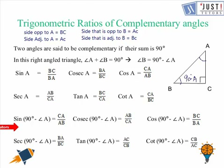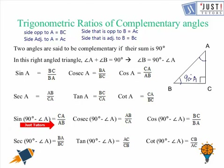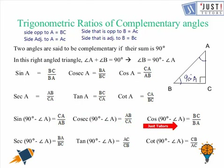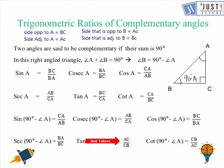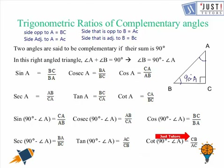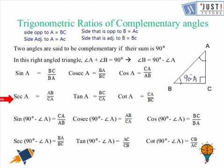Now we work with angle (90 degrees minus A). Sin(90° − A) = CA/AB, cos(90° − A) = BC/BA, so sec(90° − A) = BA/BC. We can also work out tan(90° − A) = AC/CB, and cot(90° − A) = CB/AC. So we have found the ratios of all trigonometric functions with angle A and 90 degrees minus A respectively.